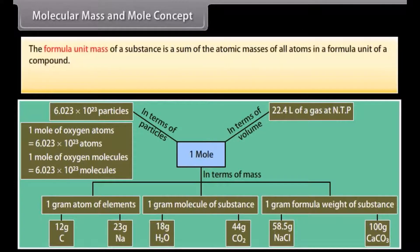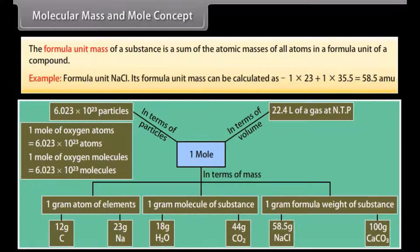The formula unit mass of a substance is the sum of the atomic masses of all atoms in a formula unit of a compound. Example: Formula unit NaCl - its formula unit mass can be calculated as 1 times 23 plus 1 times 35.5, which equals 58.5 units.